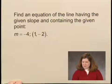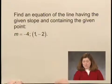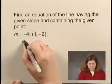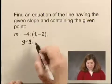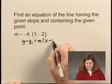In the first approach, we'll use the point-slope equation where we can substitute the slope and the point directly into the equation. The point-slope equation is y minus y sub 1 equals m times x minus x sub 1.